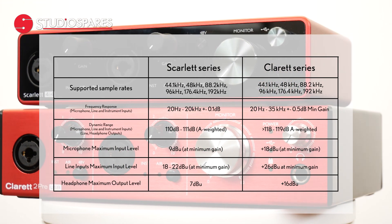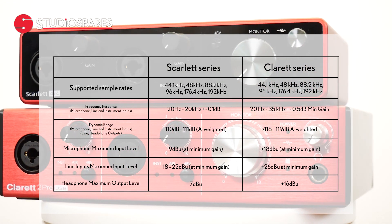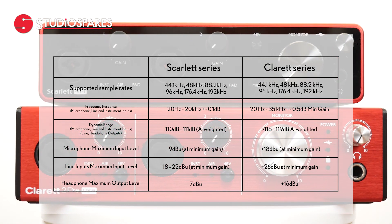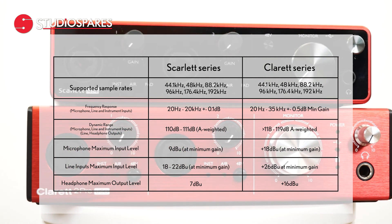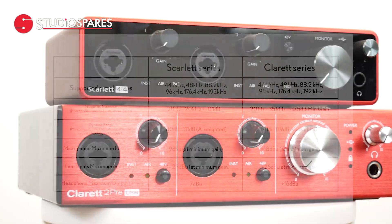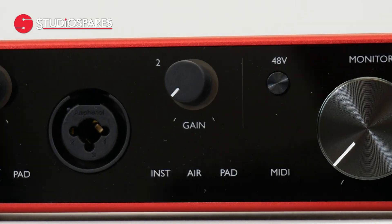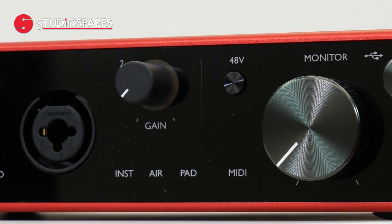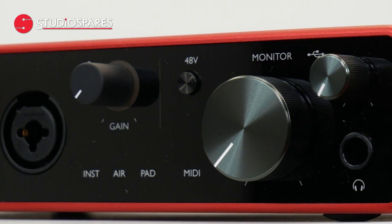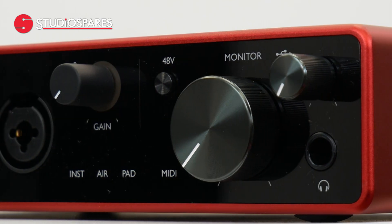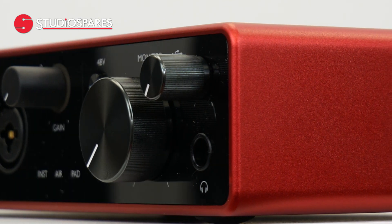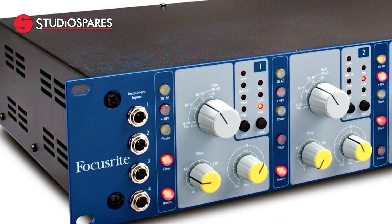It's also important to note that the Claret has a flat frequency response of up to 35kHz, and with the Scarlett it's up to 20kHz. A feature that was recently introduced to the Scarlett 3rd generation is the Air Mode, which gives your guitars and vocals an instantly brighter and more spacious sound, that can make all the difference in the mix.